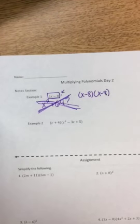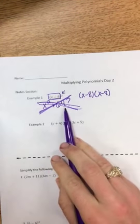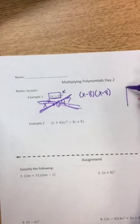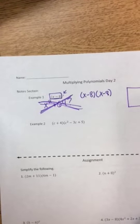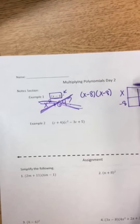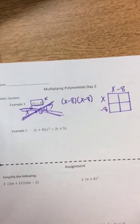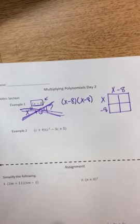This will not get us x squared plus 64. So now it looks just like the ones we have done yesterday, the 2 by 2 box, x minus 8 times x minus 8.